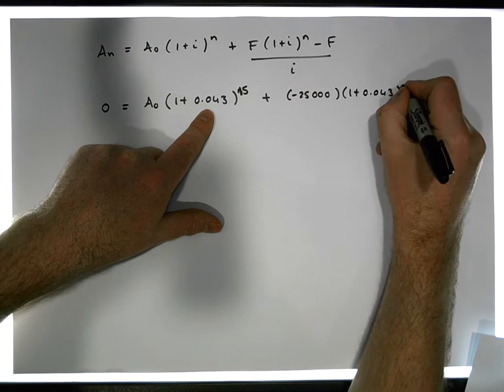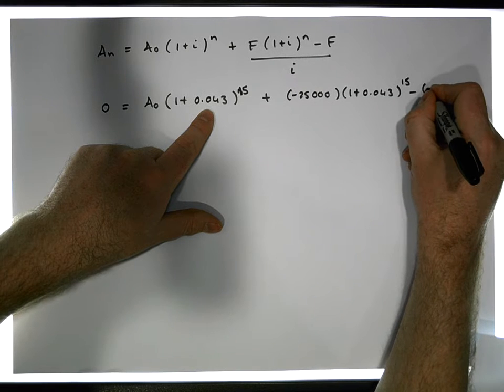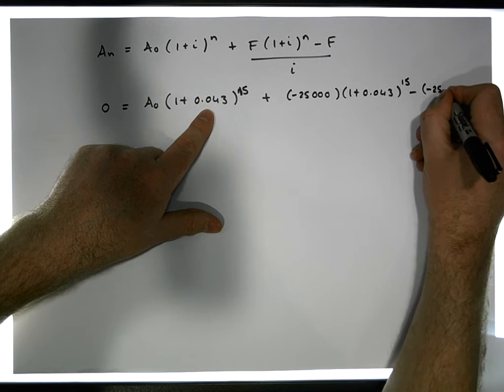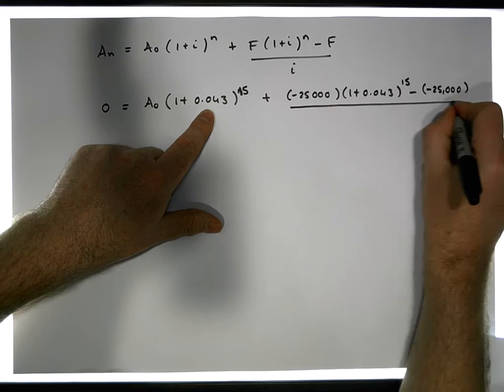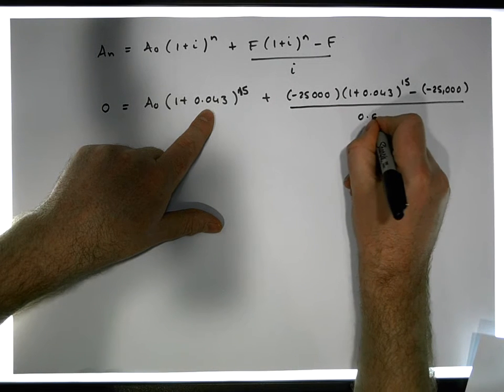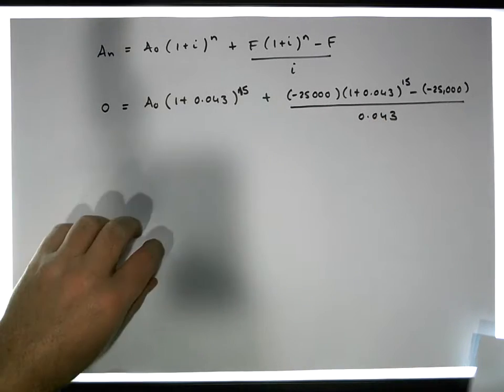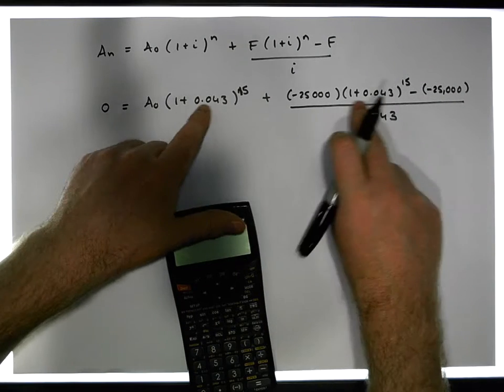Let's just work out what this factor is here, this (1 + 0.043) raised to the power of 15. So we have (1.043) raised to the power of 15.